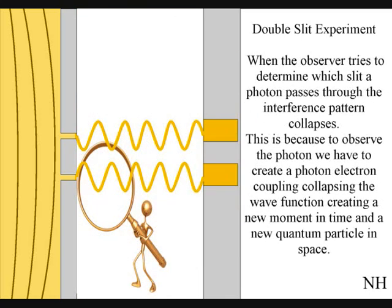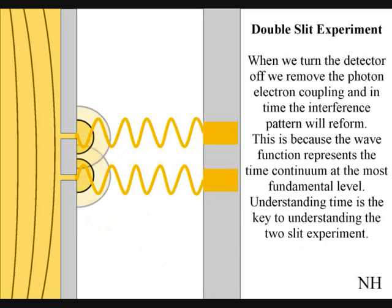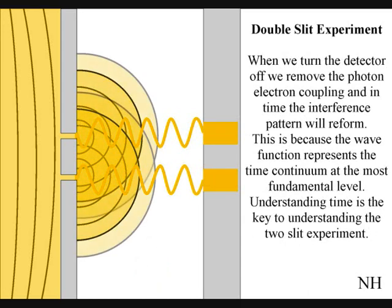When the observer turns on a detector to determine which slit a photon passes through, the interference pattern collapses. This is because to observe the photon, we have to create a photon-electron coupling, collapsing each wavefront into a new quantum particle that will have its own position in space and time. If we turn the detector off, we remove the photon-electron coupling, and in time the interference pattern will reform.